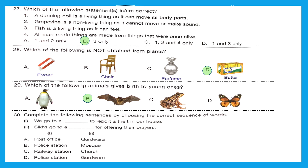Question 30: complete the following sentences by choosing the correct sequence of words. We go to a dash to report a theft in our house — we go to a police station. Sikhs go to a dash for offering their prayers — their religious place is a gurudwara. So one is police station and the other is gurudwara. The right option is option D.